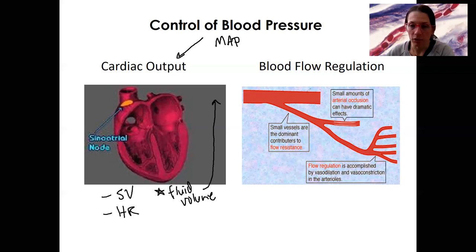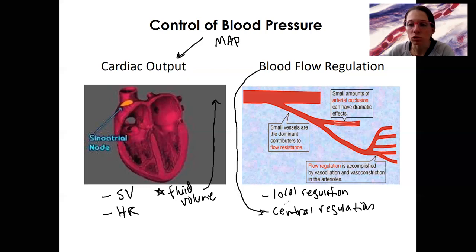Over on this other side, we've got blood flow regulation. So the regulation of flow via both local regulation and central regulation. Now central regulation, this is the one that directly is going to impact MAP. So we're talking about maintaining MAP. Central processes do that. What do I mean by central? Autonomic nervous system. We're also going to have some endocrine system as well.